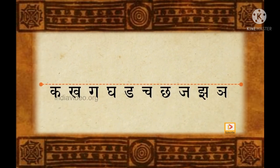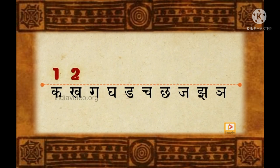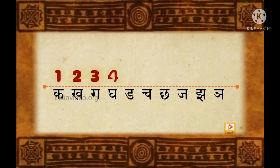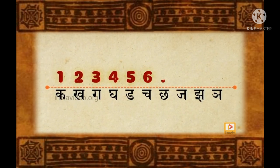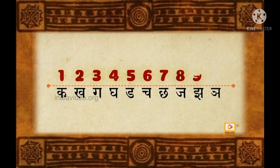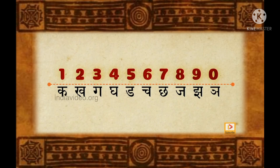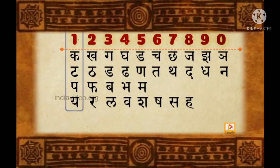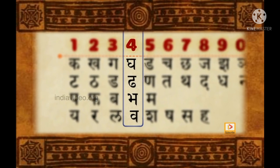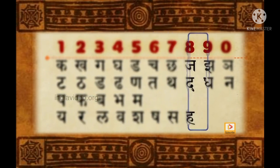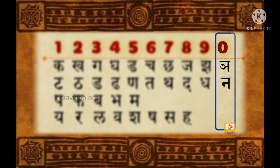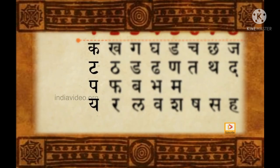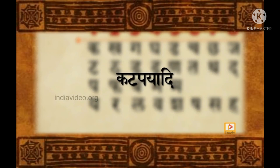Katapayadi uses Sanskrit consonants to represent numbers in the decimal system. The first consonant is assigned the numerical value 1, the second consonant is assigned the value 2, and so on, till J which is represented by 9 and N by 0. The numbers are then assigned to the next set of 10 consonants in a similar manner, resulting in multiple alphabets representing the same number. The number 1 is mapped to the alphabets K, T, P, and Ya — which pronounced together gives 'Katapayadi,' where 'Adi' in Sanskrit means numbers.